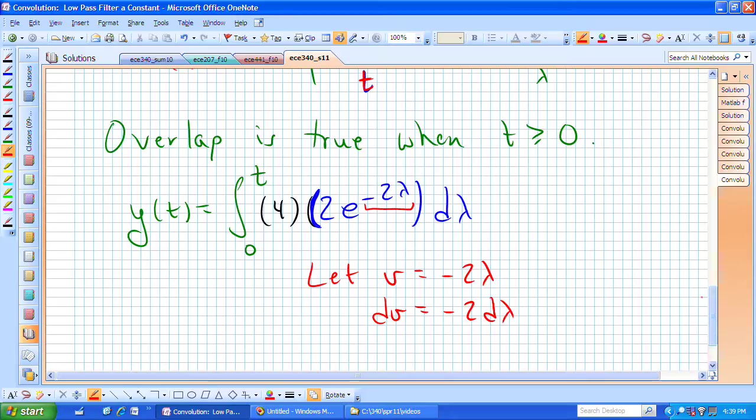My limits of integration are now, when lambda was equal to 0, that now says that v, which is minus 2 lambda, is 0.